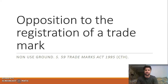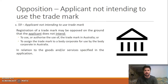We're going to look at the opposition to the registration of a trademark pursuant to the non-use ground found in section 59 of the Trademarks Act. The section states that registration of a trademark may be opposed on the ground that the applicant does not intend to use or authorise the use of the mark in Australia, or to assign it to a body corporate, in relation to the goods and/or services that the applicant has specified in their application.